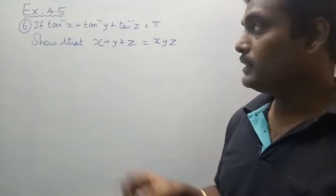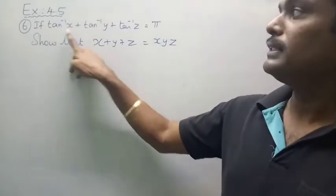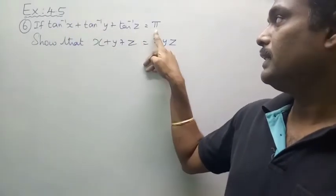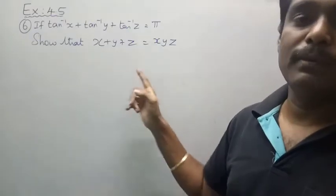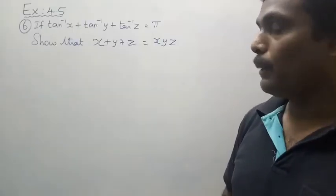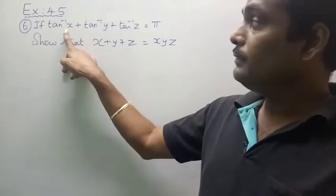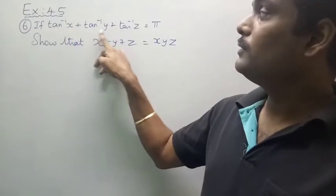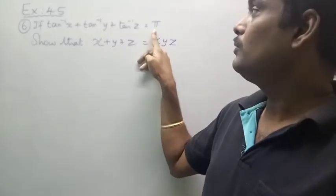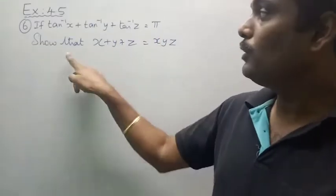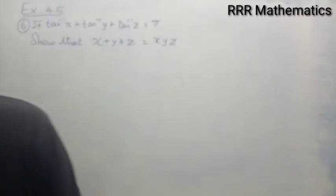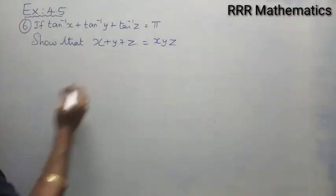If tan inverse x plus tan inverse y plus tan inverse z equals pi, you want to show that x plus y plus z equals the product x into y into z.